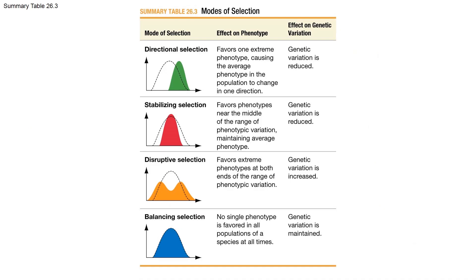In general, we've gone over the different modes of selection. To sum it up: there's directional selection, which favors one extreme phenotype; stabilizing selection, which favors phenotypes near the middle of a phenotypic range; disruptive selection, which favors the extreme phenotypes; and balancing selection, where no single phenotype is favored all the time — it can vary based on how frequent that phenotype becomes.